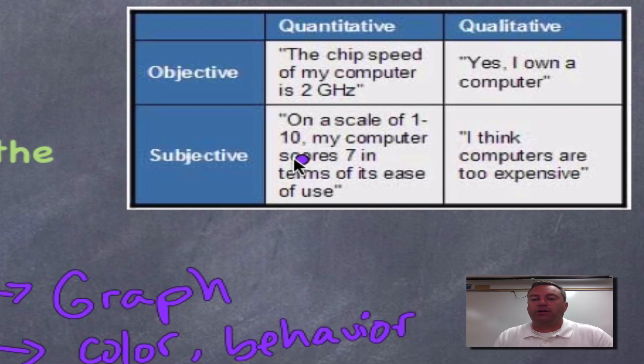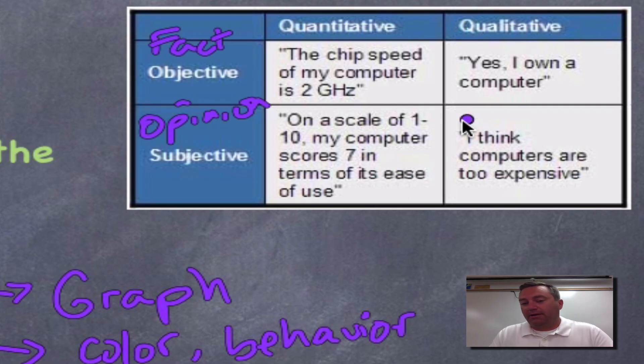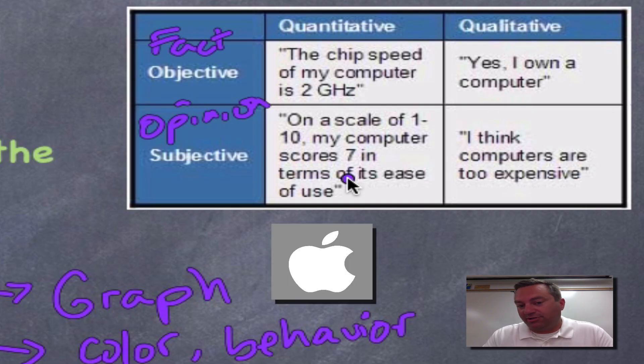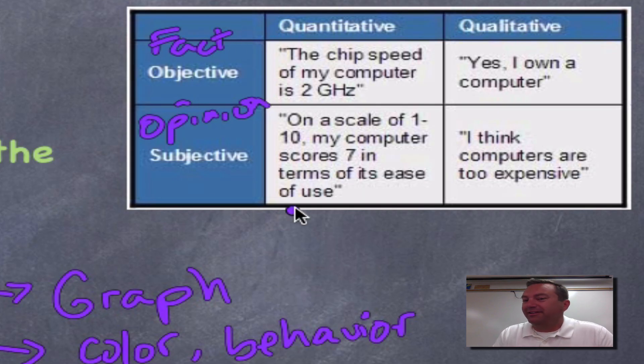I want you to look up here at this table. This deals with computers. We're looking at quantitative, remember this is number. The chip speed is two gigahertz, which is not uncommon for a one or two-year-old laptop. Subjective. On a scale of one to ten, my computer scores a seven in terms of its ease of use. Now, subjective means it's an opinion. Objective means it's a fact. That's a fact. That's how fast it goes. You can measure it. On a scale of one to ten, that's an opinion. Now, probably the reason why this person's computer only scored a seven, because it was a Windows machine and not a Mac. Now, that is also a subjective notation, because that's my opinion. But if you're a Mac user, you'll know that's pretty much a fact.